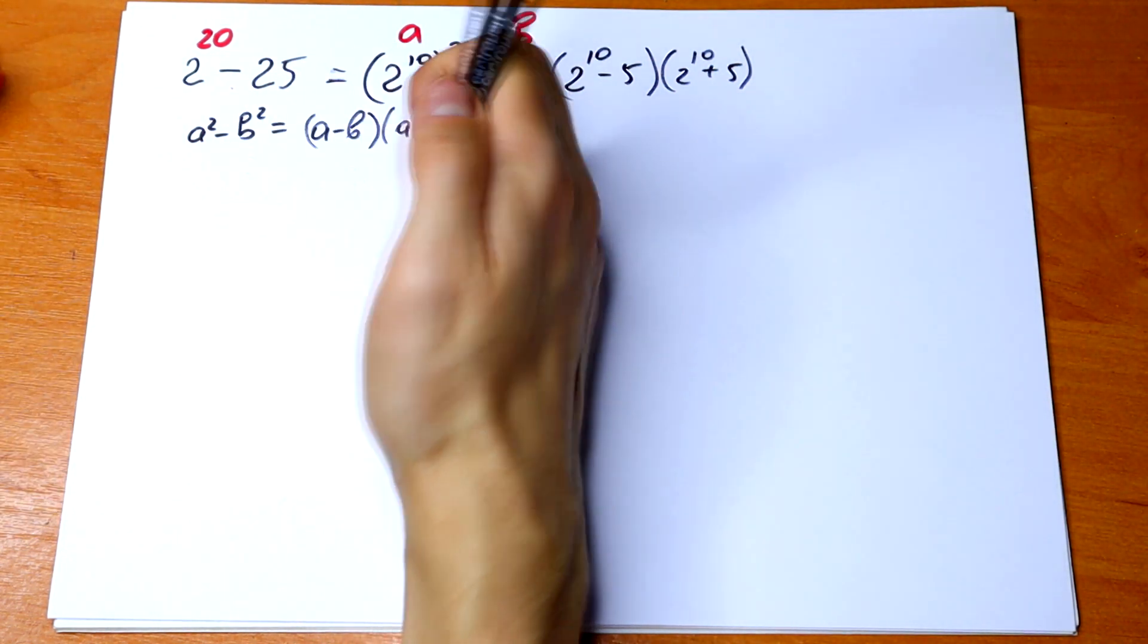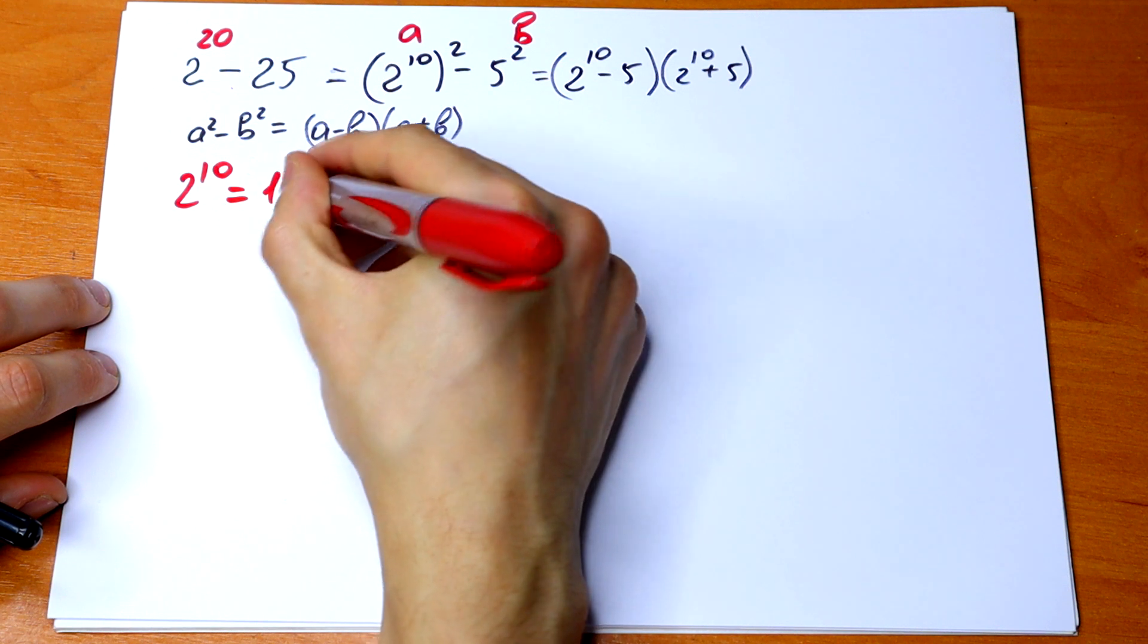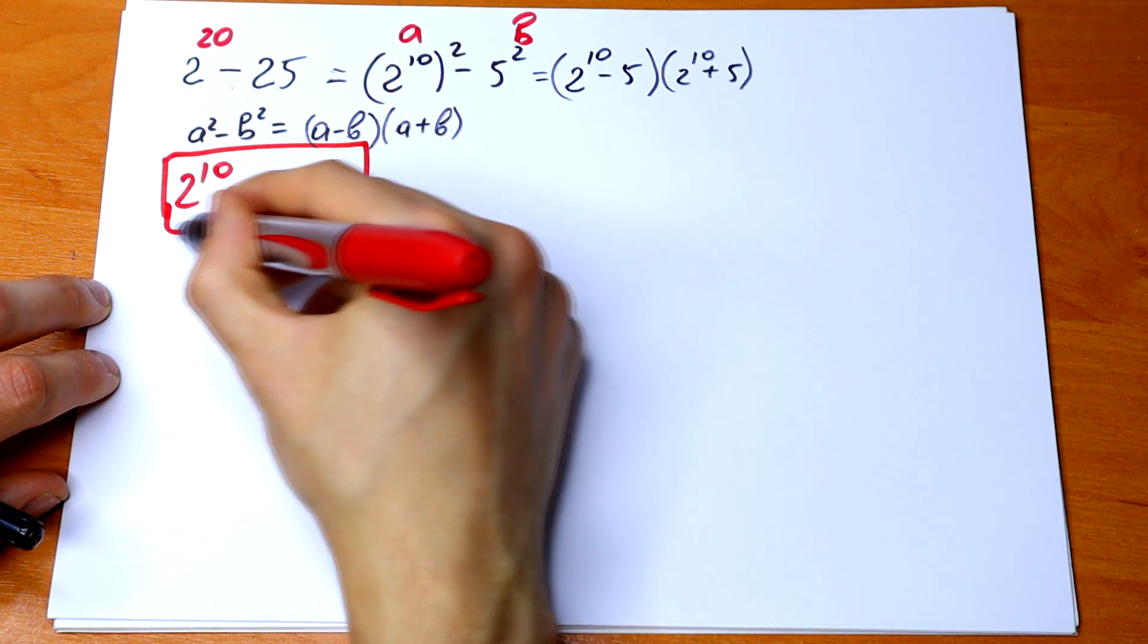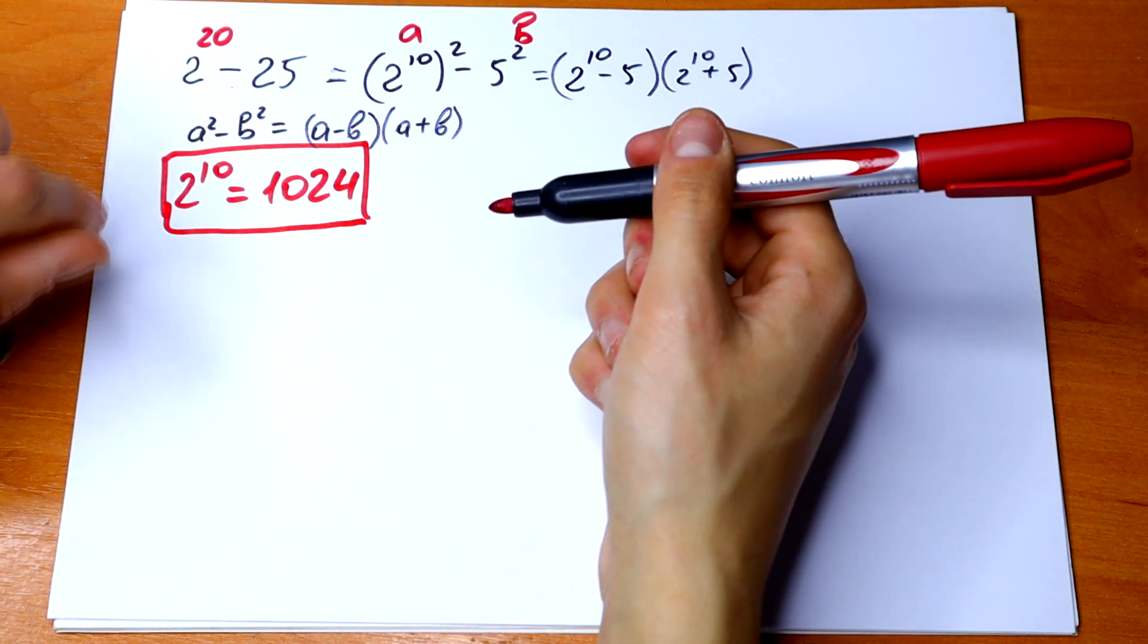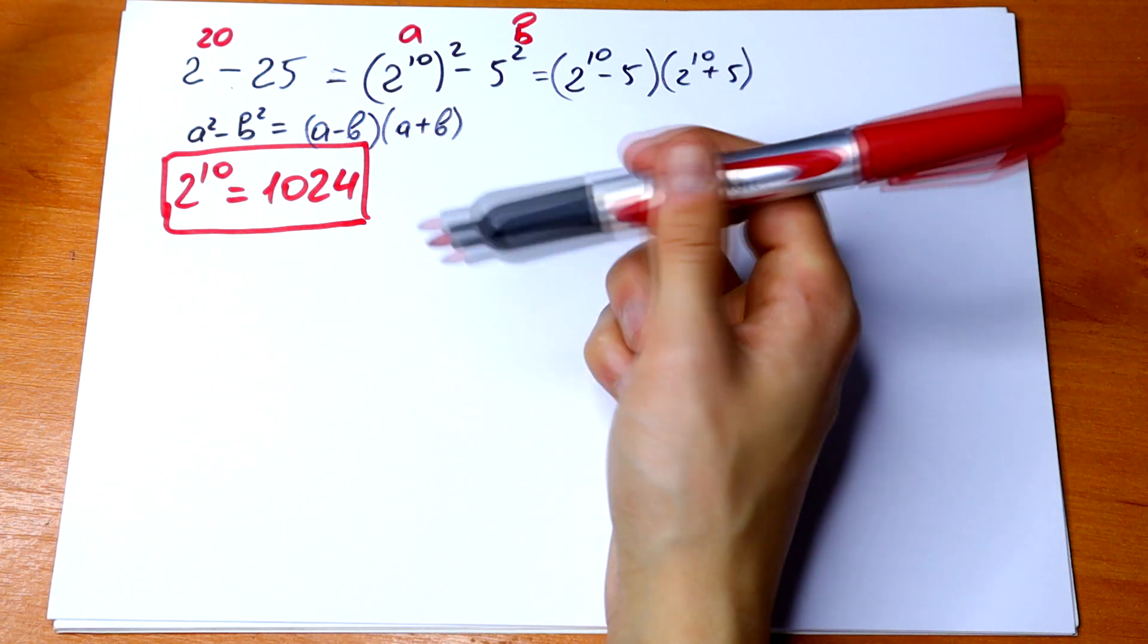2 to the 10th power equals 1024. It's really good to know this. I think programmers know this as well. And if you don't know this, remember this. It's really good to know.